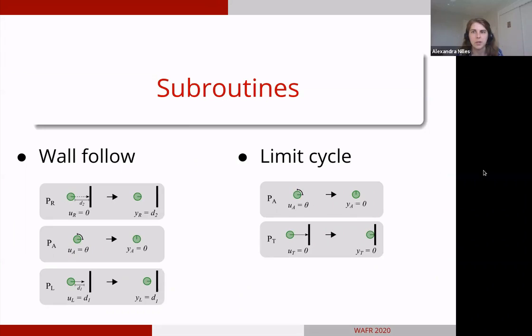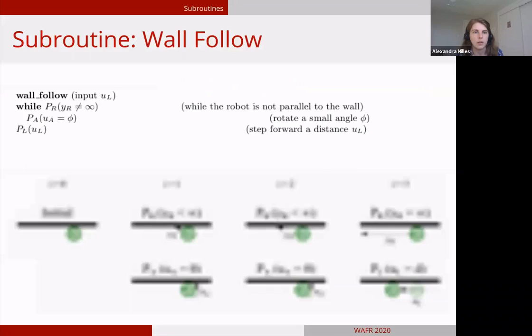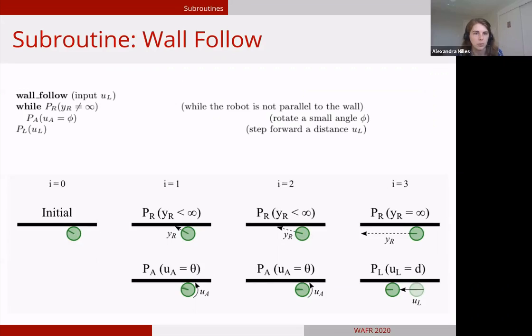Once we had these primitives designated, we developed modular subroutines that allowed us to develop a hierarchical controller. Here we'll discuss two of the subroutines: wall following and limit cycle. Wall following can be implemented many different ways. Here we assume that we use the range sensor and rotating a small angle to be able to follow a wall while still keeping it in your line of sight. This could also be implemented mechanically. If you have a flat side of your robot and it encounters a wall, it will just move along that wall.